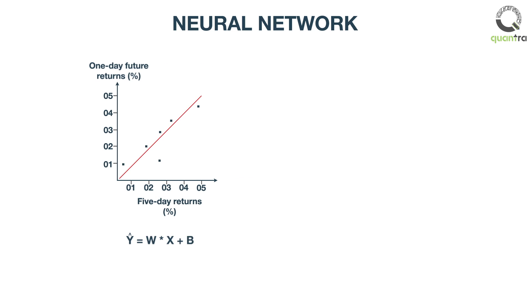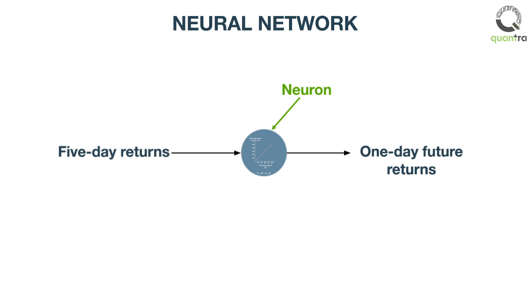In other words, we have 5 day returns as input that goes into this circle and gives an output as 1 day future returns. The circle is known as a neuron and implements this linear regression function.